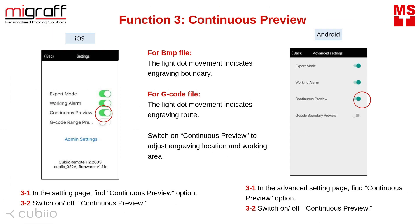Function number 3: Continuous preview. For BMP file, the light dot movement indicates the engraving boundary. For G-code file, the light dot movement indicates the engraving route. Switch on continuous preview to adjust engraving location and working area. In the setting page, find the continuous preview option and switch it on or off.